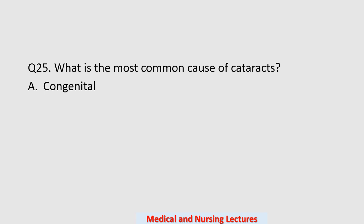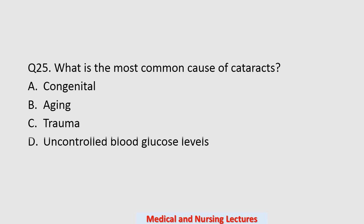Question number twenty-five: what is the most common cause of cataract? Options are congenital, aging, trauma, or uncontrolled blood glucose level. The correct option is aging, followed by trauma and then uncontrolled blood glucose level.